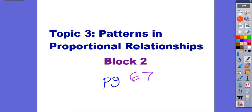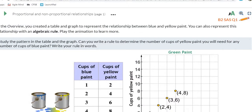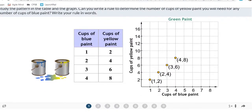This is block 2 from topic 3, page 67 in our workbook. Looking at problem 1, we have a table and graph showing cups of blue paint and cups of yellow paint. We know that mixing blue and yellow paint makes green.